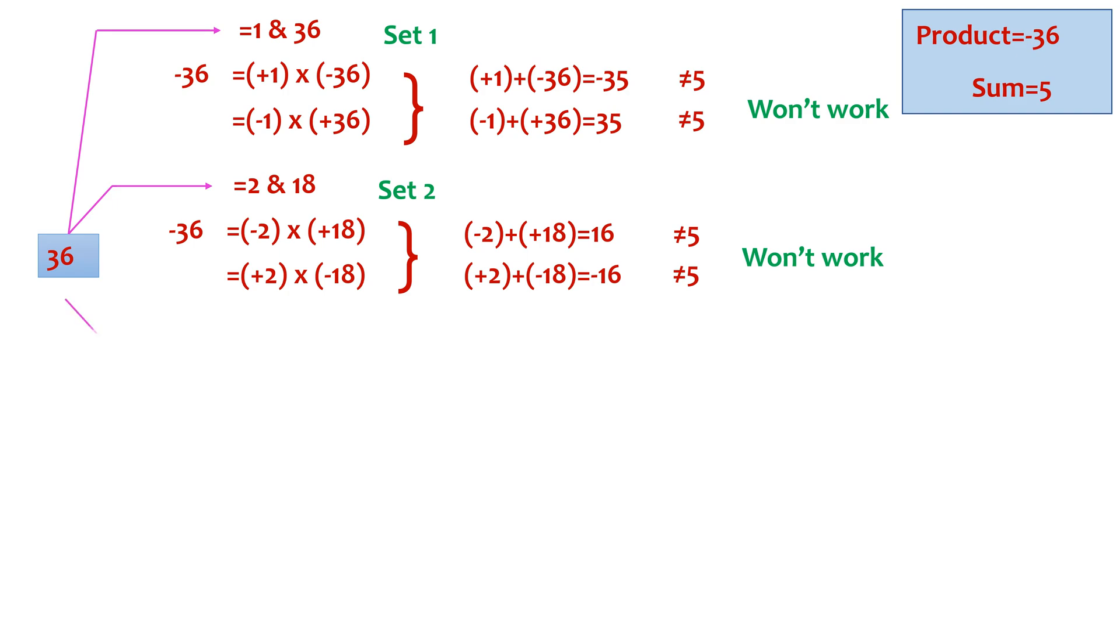Let's move on to another set of factors. It can be 3 times 12. Just look at this. Even this won't work, as we cannot use 3 and 12 to be 5 when added, even if we put a negative sign to one of them.